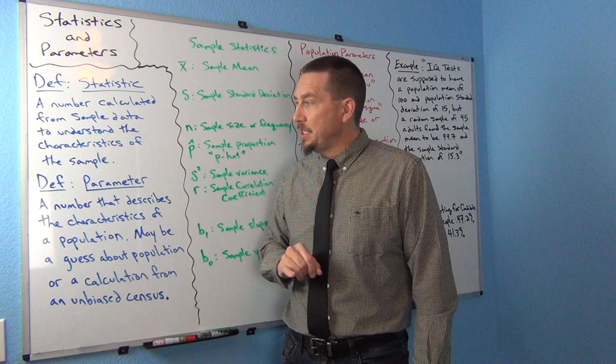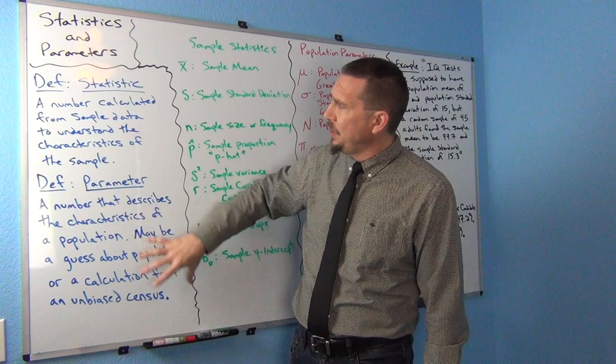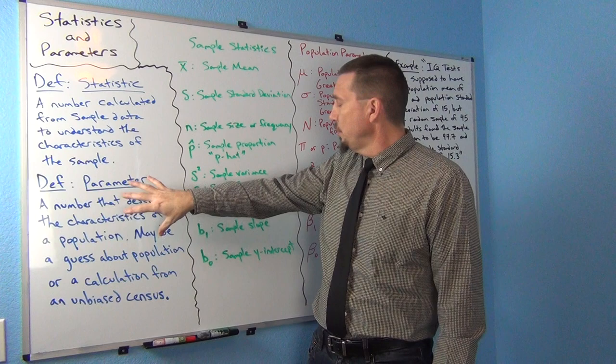Parameters are oftentimes guesses. So now we have two different sets of letters: letters that represent statistics from sample data, and letters that represent population parameters.